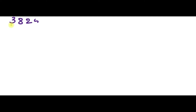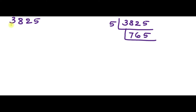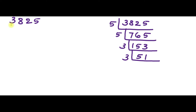Second question: express 3825 as the product of its prime factors. Dividing 3825 by 5 gives 765. 765 is again divisible by 5, giving 153. 153 is divisible by 3, giving 51. 51 is again divisible by 3, giving 17. So 3825 = 5² × 3² × 17.